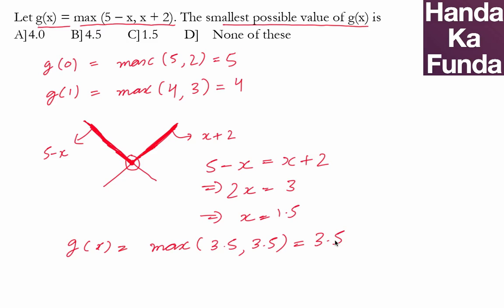So the maximum possible value of g(x), sorry the smallest possible value of g(x) is 3.5 which is not there in the options. So I will mark none of these, option D. Thank you.